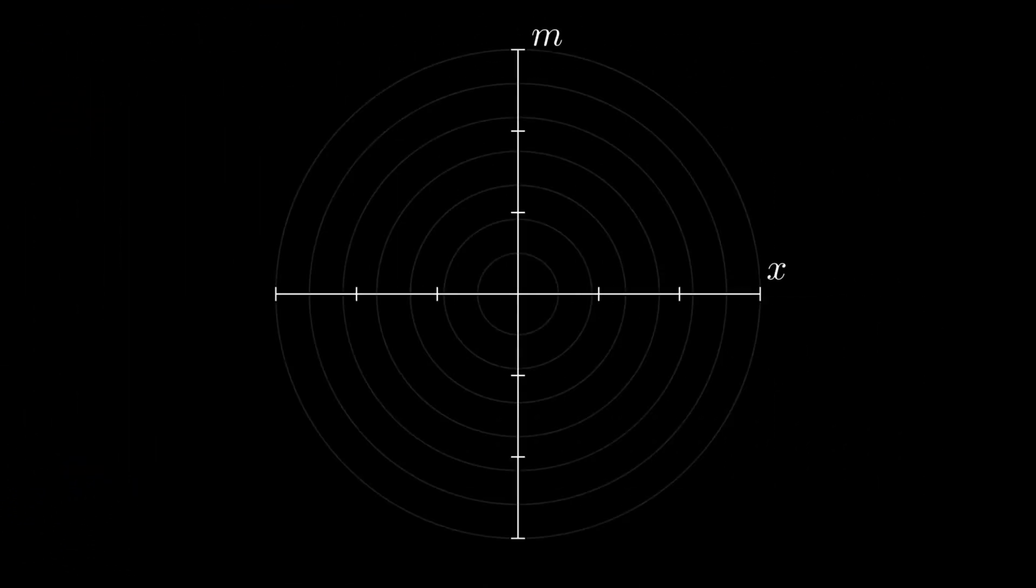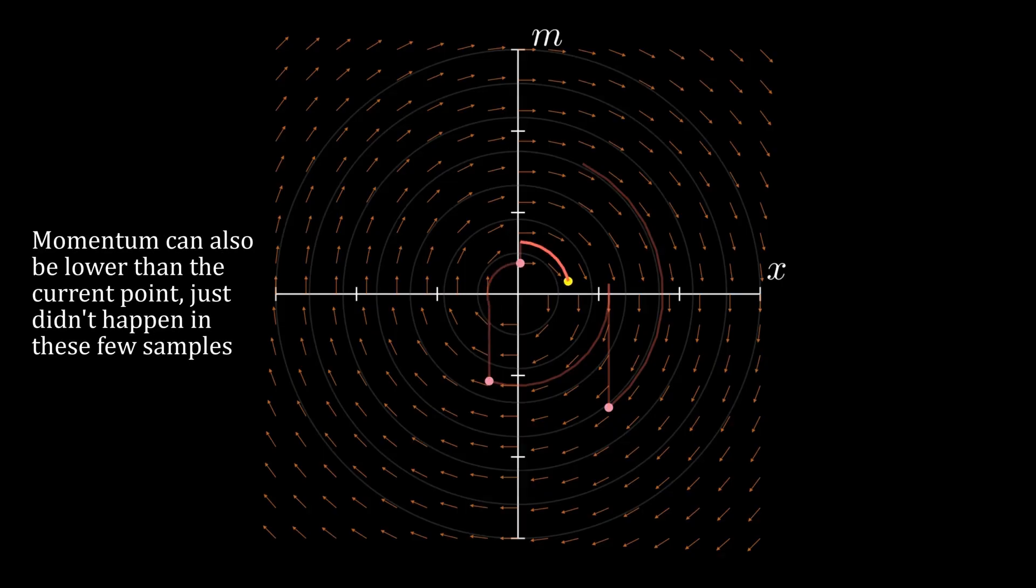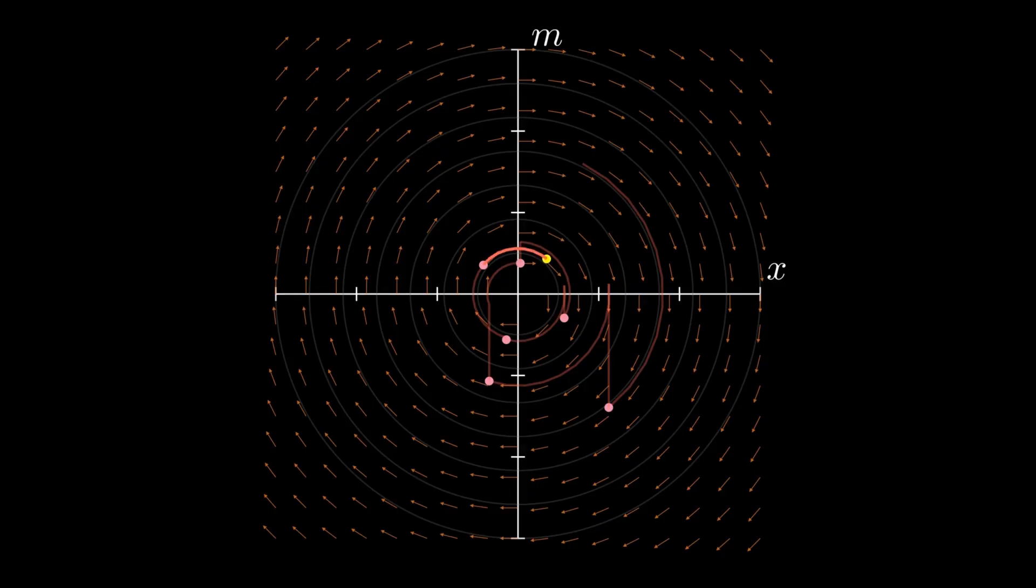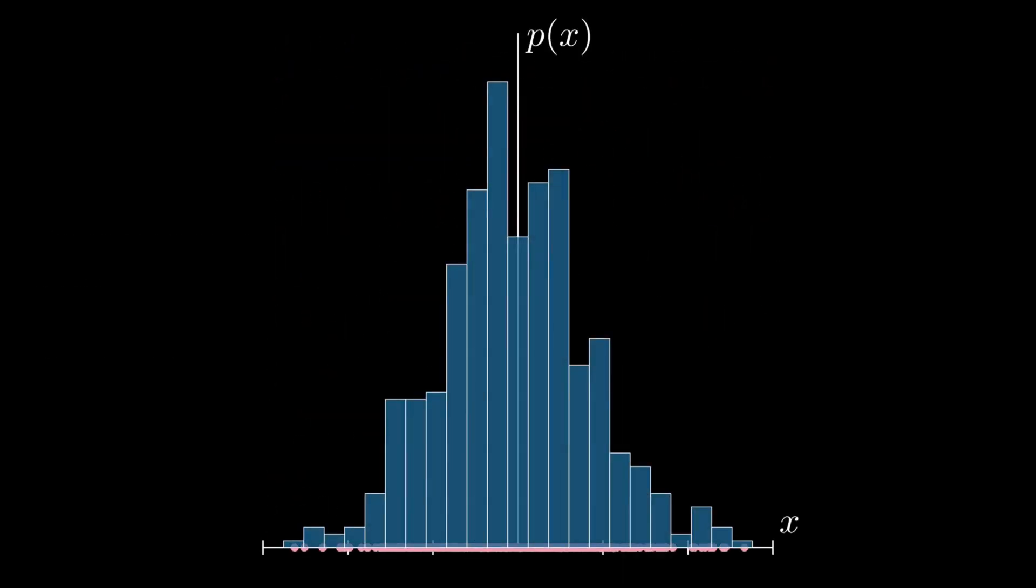Here you can see how the algorithm looks in the phase space. We start at some position, take L small steps, usually accept the new point, then we sample a new momentum, and continue. If we do this for a long time, we get a lot of points, and we can see that they do resemble a normal distribution, which is the target distribution of this example.